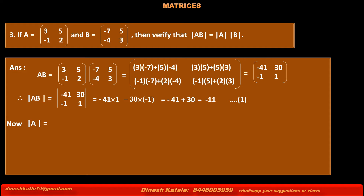Now, the determinant of A equals the determinant of [3, 5; -1, 2], which is 3×2 minus 5×(-1). That is 6 + 5, equal to 11.